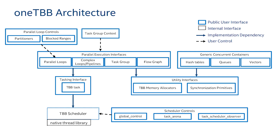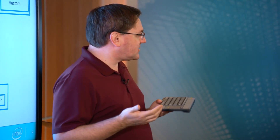TBB also includes more complex algorithms like pipelines and task groups. There's a flow graph API for expressing data flow and dependence graphs. These are all built on top of TBB tasks. TBB is a task-based programming model, and these tasks execute on top of the TBB scheduler, which is a work-stealing task scheduler. TBB started back in 2006 and is pretty widely used in the industry for threading.